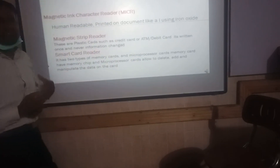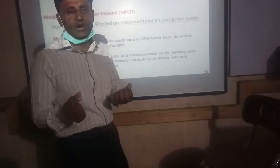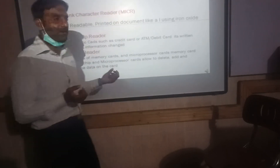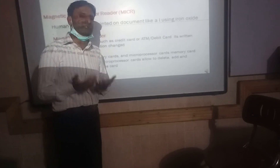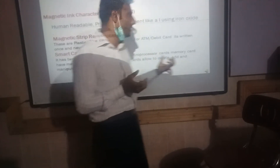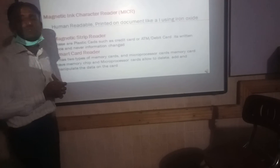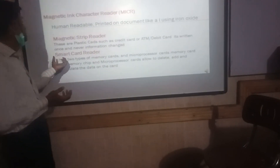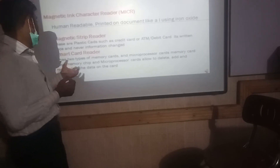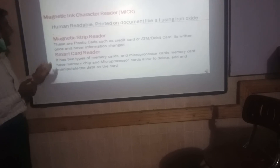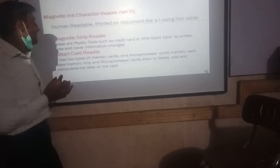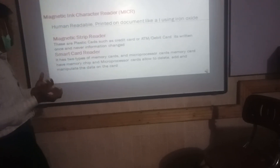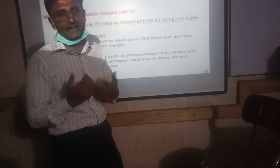In a microprocessor-based smart card, we can delete, manipulate, and save the data. In a memory card, we can also delete and save the data. The smart card reader works by reading these two chips — the microprocessor and the memory card — and this is how we use it to store our information.